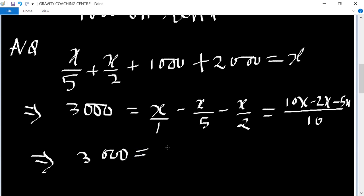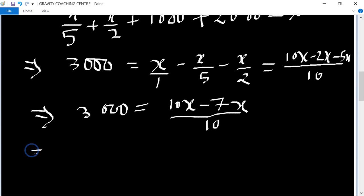10X minus 2X minus 5X. This implies that 3,000 equal to 10X minus 7X upon 10. So 30,000, times 10, 30,000 equal to 3X.